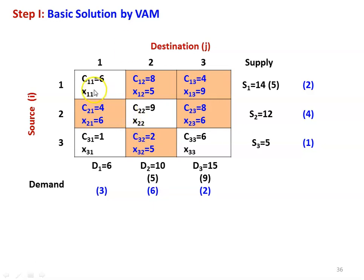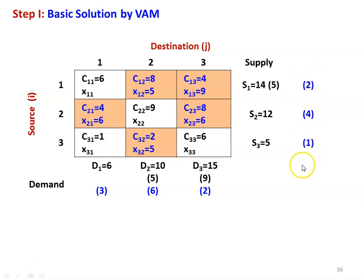In Vogel's Approximation Method, we find the difference between the two lowest cost values for every row and column. Row 1: lowest is 4, next lowest is 6, difference = 2. Row 2: lowest is 4, next lowest is 8, difference = 4. Row 3: lowest is 1, next lowest is 2, difference = 1. These differences are written to the right of the supply. For Column 1: lowest is 1, next lowest is 4, difference = 3. Column 2: lowest is 2, next lowest is 8, difference = 6. Column 3: lowest is 4, next lowest is 6, difference = 2.